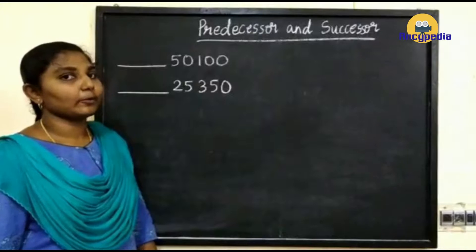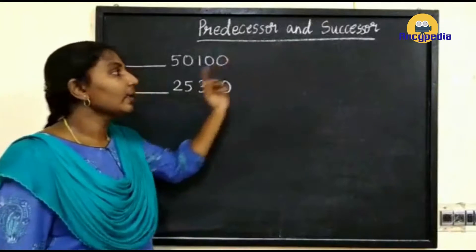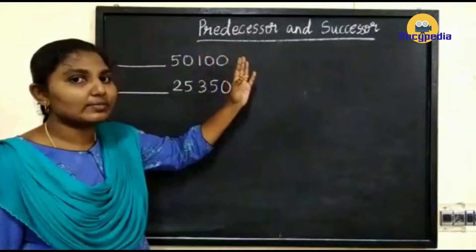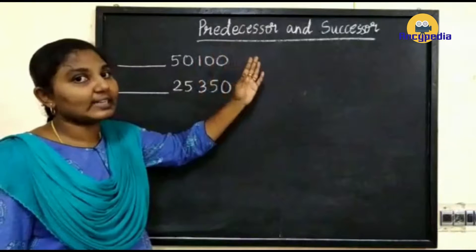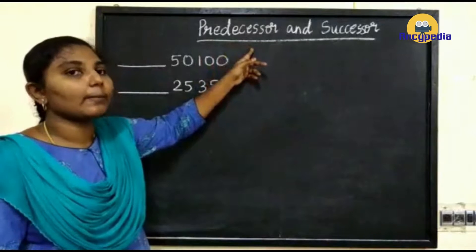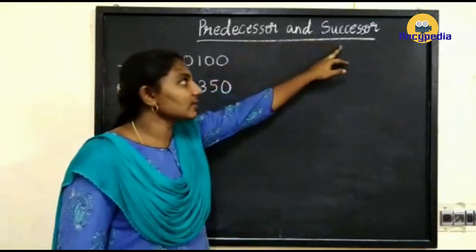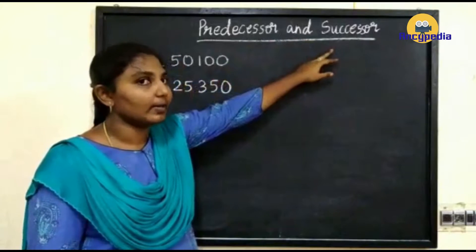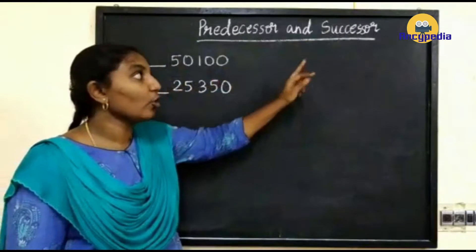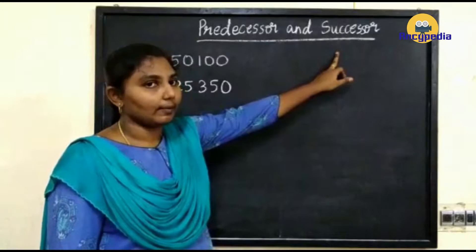Good morning children, today I am going to teach predecessor and successor. The predecessor of a number is the number which comes just before the given number — that means you have to write the previous number of the given number. Successor means it is the number which comes just after the given number, so you have to write the next number of the given number.